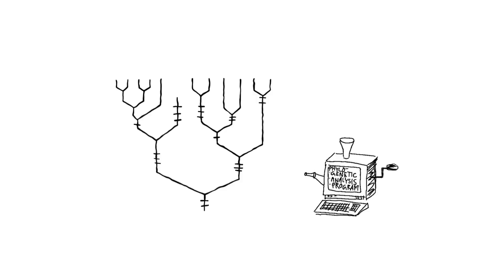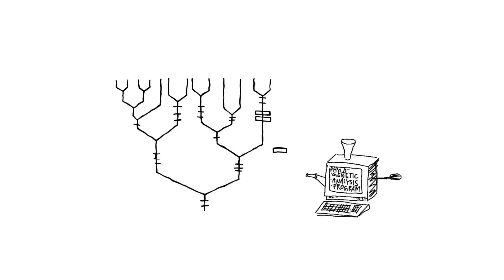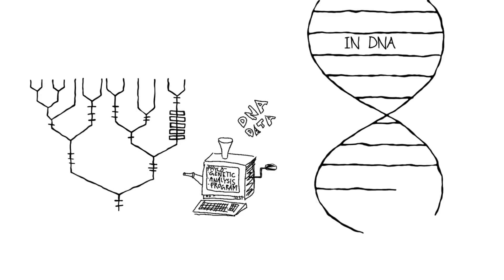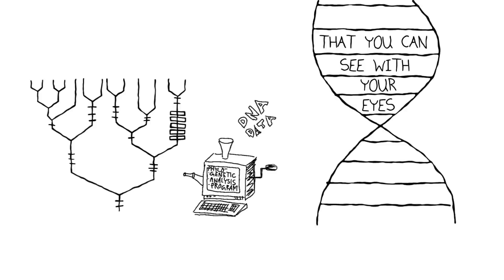There's something relatively new on the scene to help phylogeneticists test these hypotheses of relationships, and that, of course, is DNA. Evolutionary pathways and novel features are recorded just as much in DNA as they might be in the physical traits of an organism that you can see with your eyes.